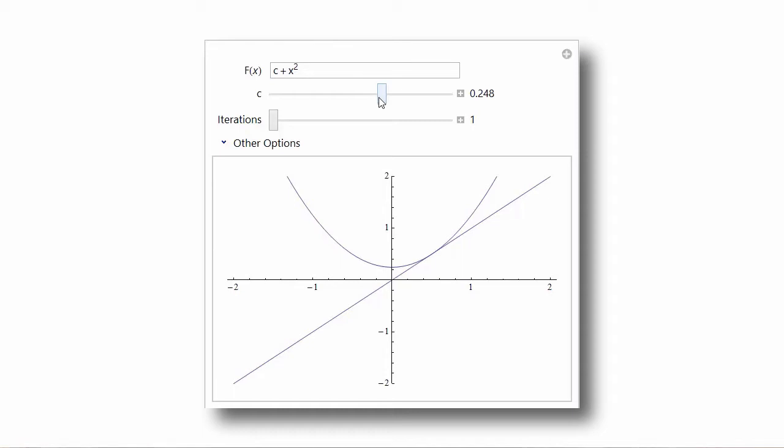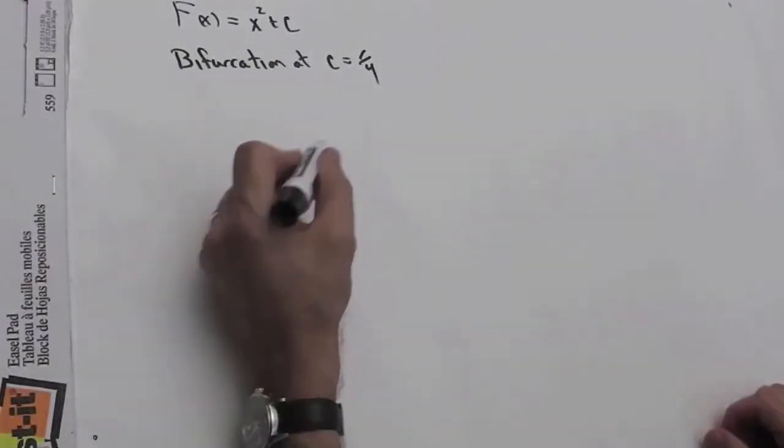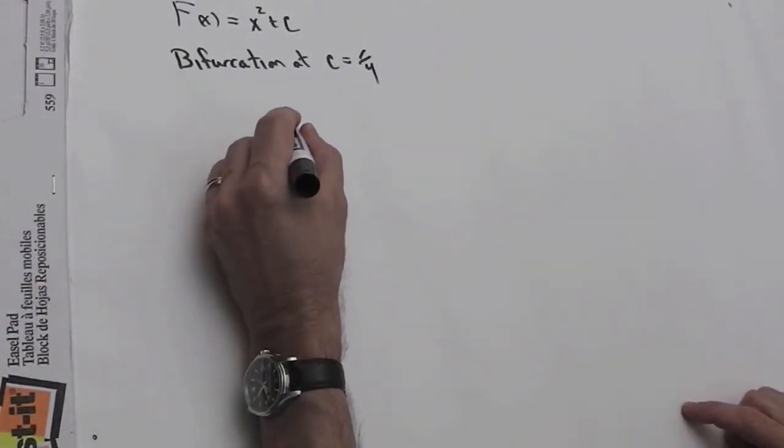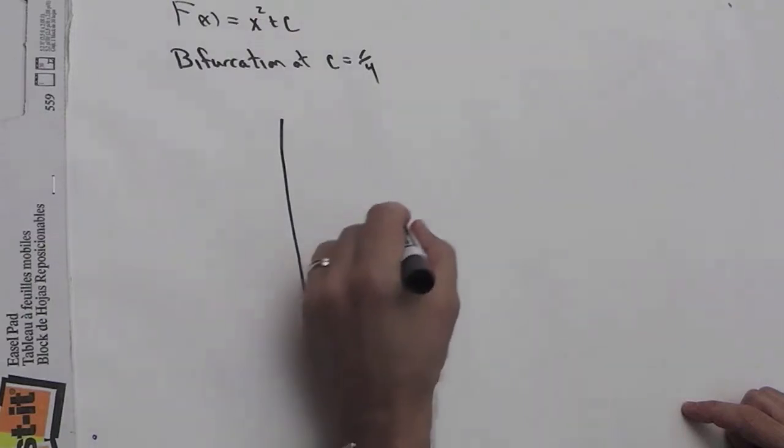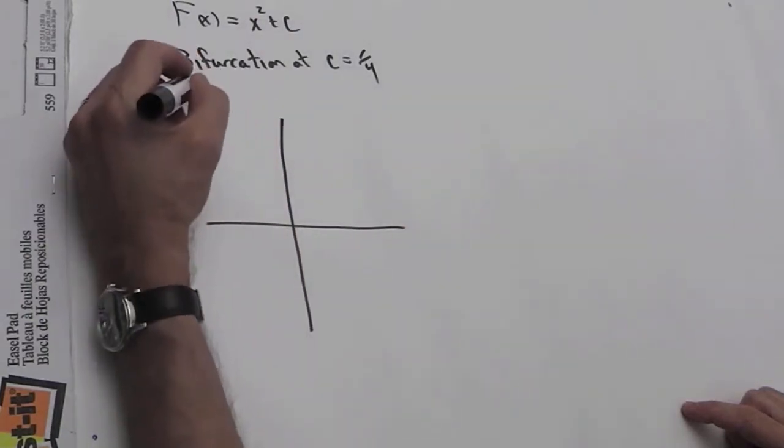How can we collect some of the information about what's happening here at the bifurcation point in a diagram? Well, let's go back to here and see if we can build what's called a bifurcation diagram.